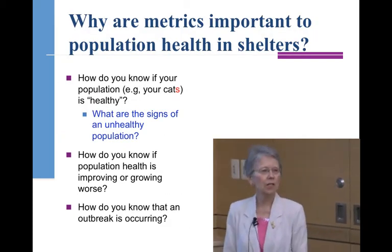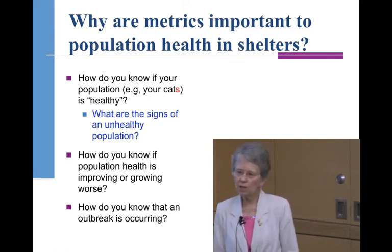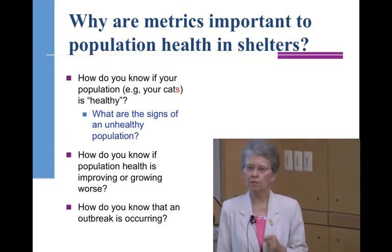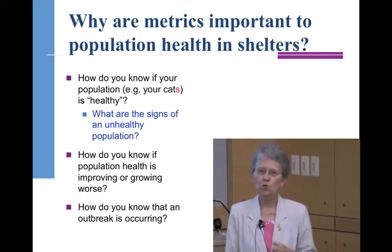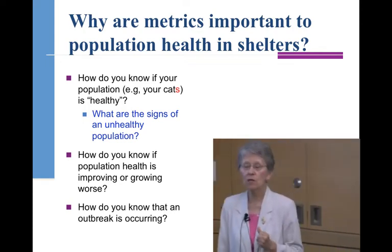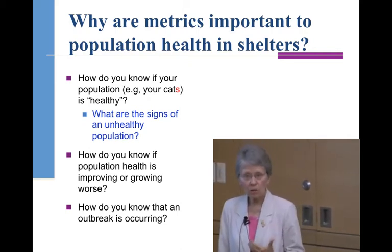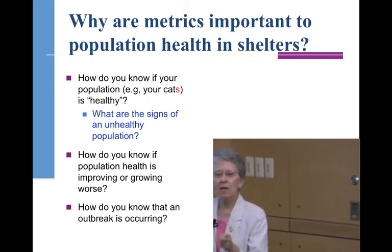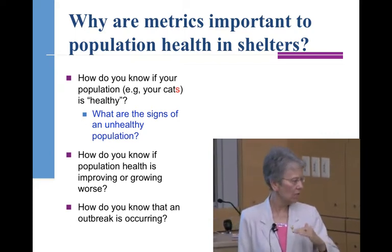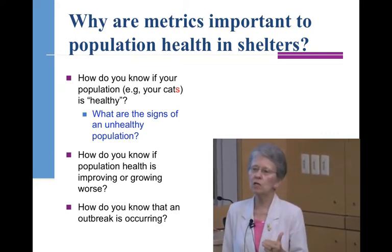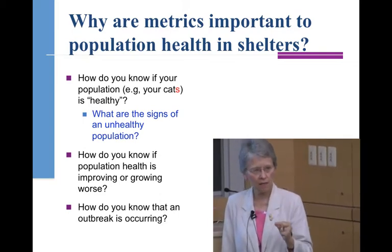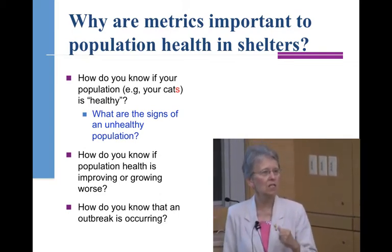So how do you know if a population is healthy? Is a population where one out of every three cats that walks through the door develops an upper respiratory tract infection a healthy population? Would you rather have a population where less than one in every ten cats develops URI? When animals are sick, they suffer. The mission of every shelter ought to be reduction of suffering in animals. If disease causes suffering, then we ought to be doing everything we can to reduce the level of disease at the population level.